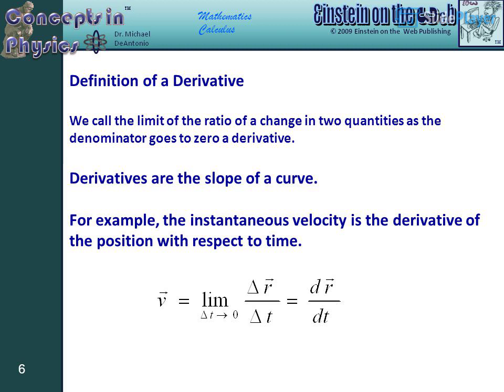Definition of a derivative. We call the limit of the ratio of a change in two quantities as the denominator goes to zero a derivative. Derivatives are the slope of a curve. For example, the instantaneous velocity is the derivative of the position with respect to time.